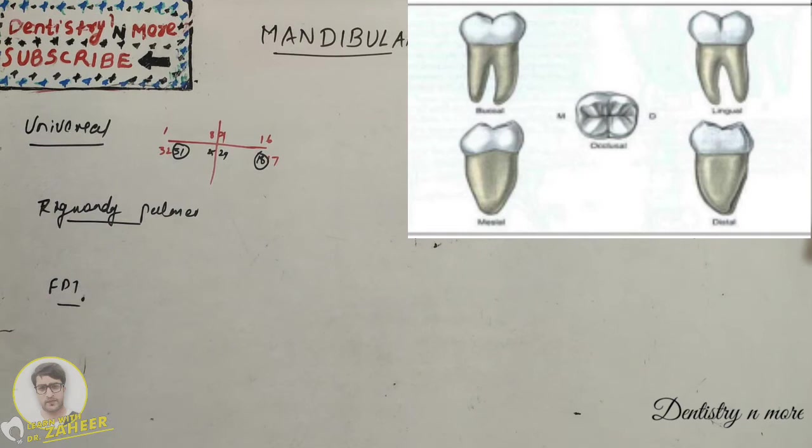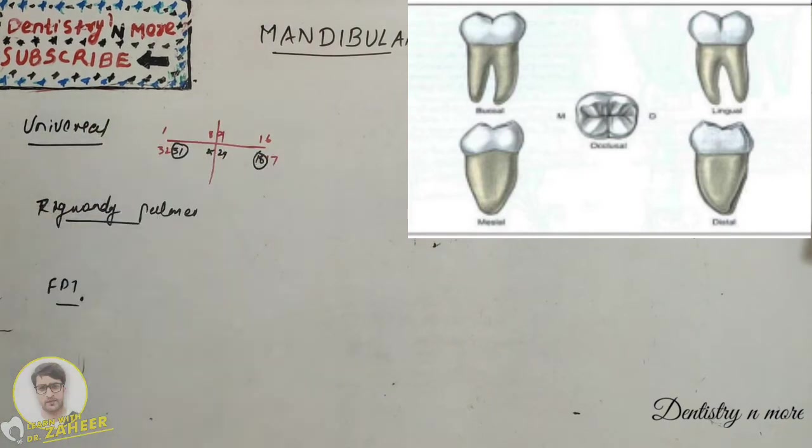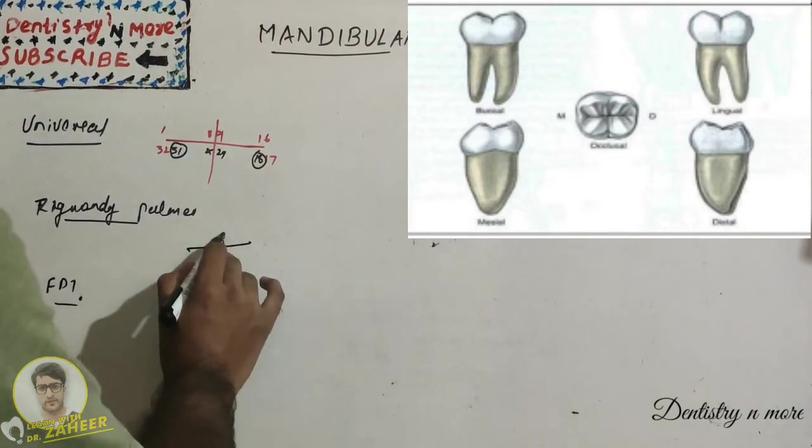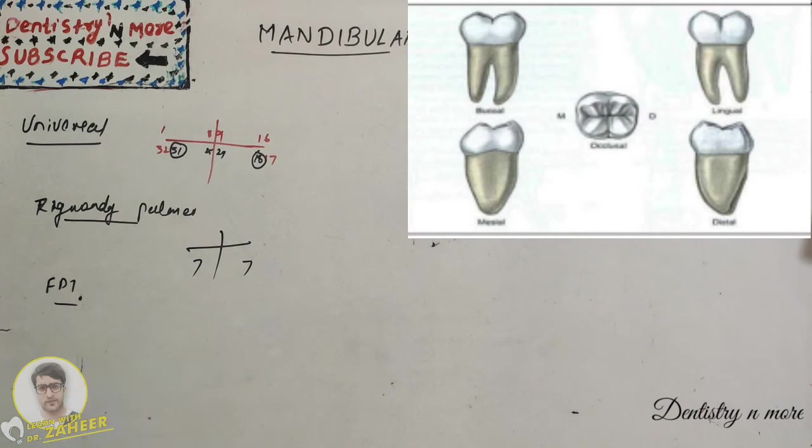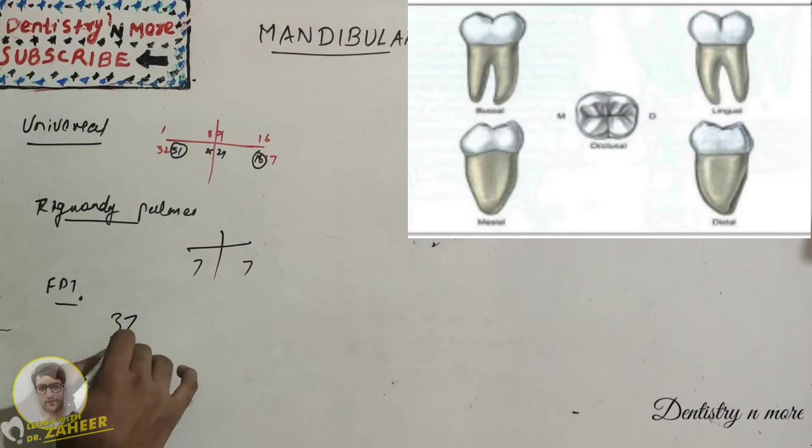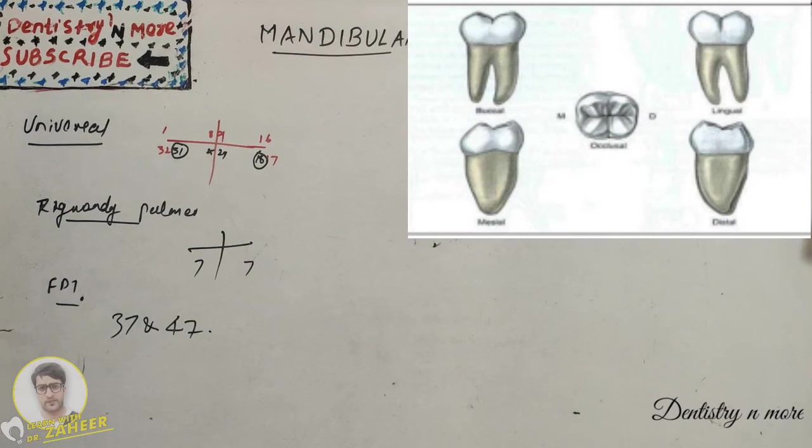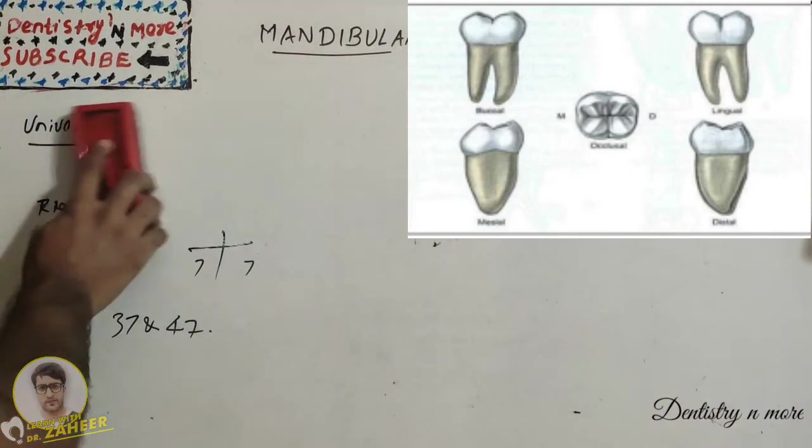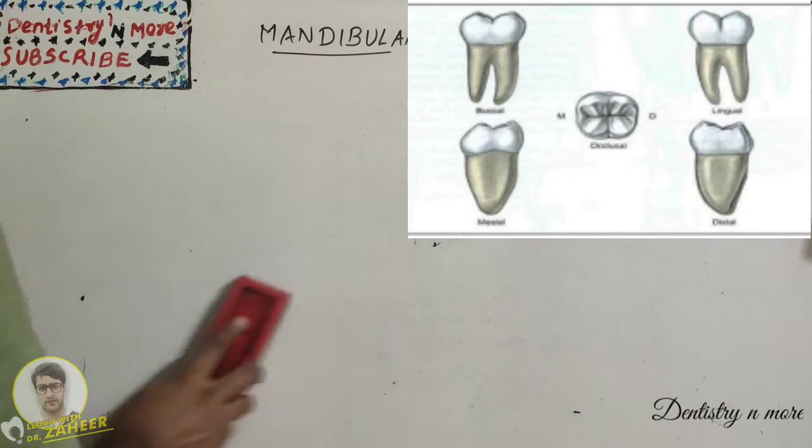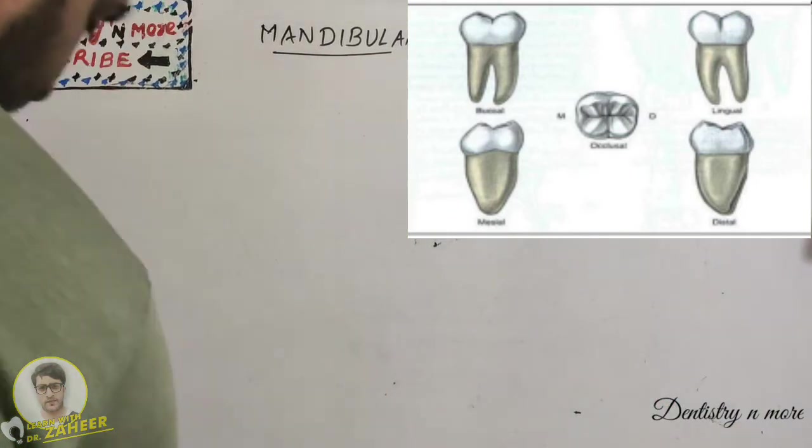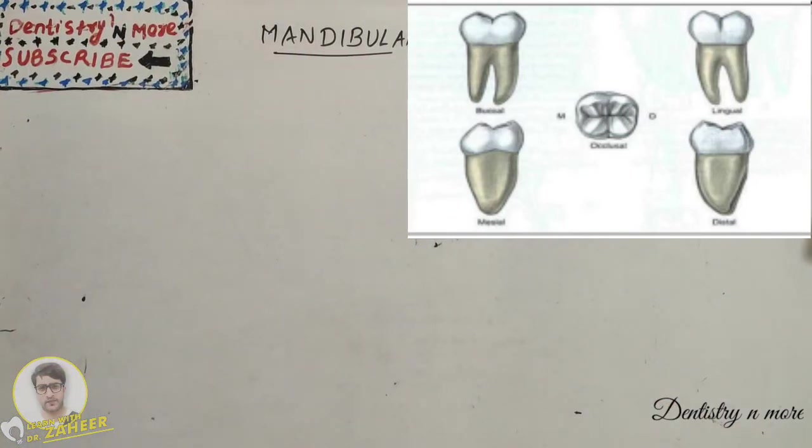These are the end tooth in each quadrant. The Zigmondy Palmer system, it will be 7 and 7, and FDI system will be 37 and 47.